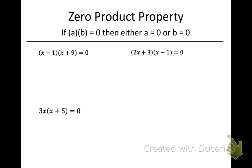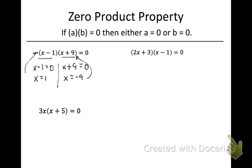So this is what it looks like. We have these two expressions multiplying together, and those are called factors, and they both equal zero. The zero product property rule states that one or the other has to be equal to zero, so we just take both of those expressions separately and set them equal to zero. Then we just do the math to solve, and we get the two possible answers that, if plugged in, would make that expression zero.